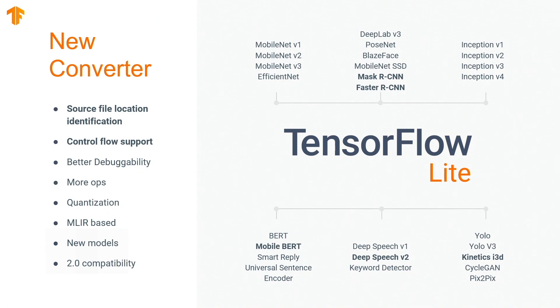Seamless and more robust model conversion has been a major priority for the team, and we'd like to give an update on a completely new TensorFlow Lite model conversion pipeline. This new converter was built from the ground up to provide more intuitive error messages when conversion fails, add support for control flow, and support more advanced models like BERT, DeepSpeech V2, Mascar CNN, and more. We're excited to announce that the new converter is available in beta and will be available more generally soon.